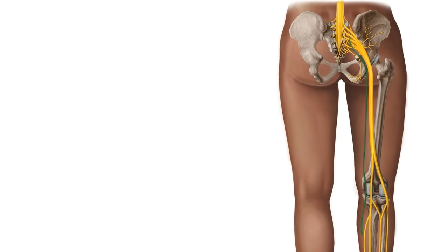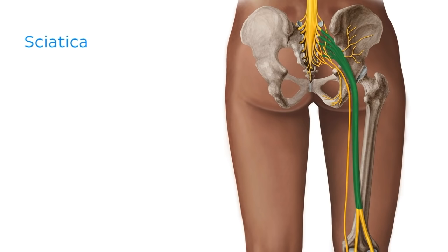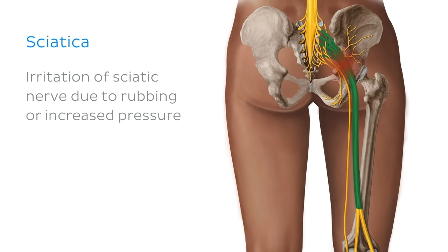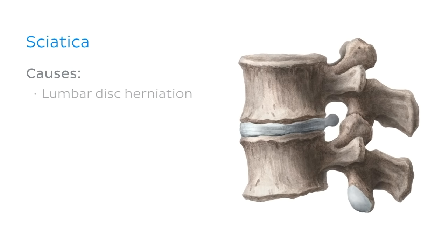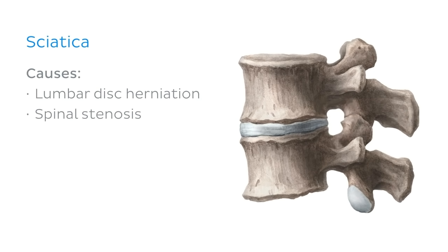Now that we're familiar with the sciatic nerve and its branches, let's get clinical. In today's clinical notes, we're going to be talking about sciatica, which is irritation of the sciatic nerve due to rubbing or increased pressure. The most common cause of sciatica is lumbar disc herniation, which can place increased pressure on the spinal nerves that form the sciatic nerve. Another cause is spinal stenosis, where the vertebral foramen and spaces between the vertebrae get smaller, pinching the spinal cord and the nerves around it. Sciatica can also be caused by tumours within the spine or a back injury.